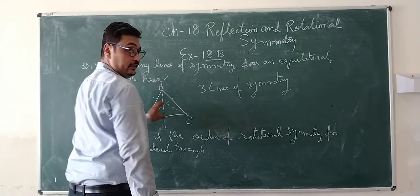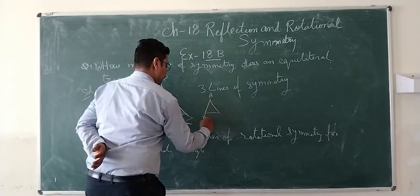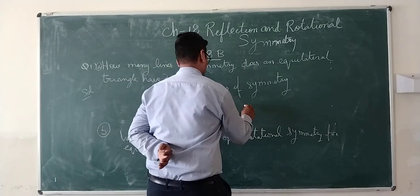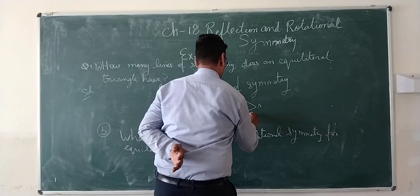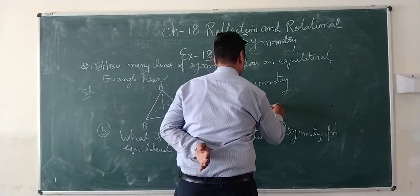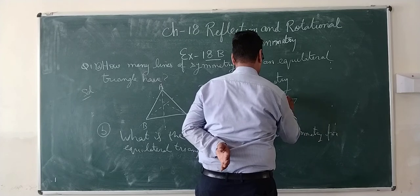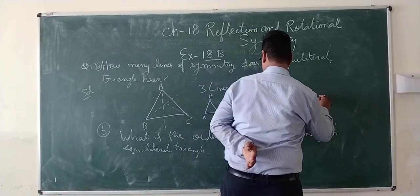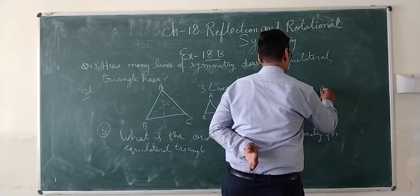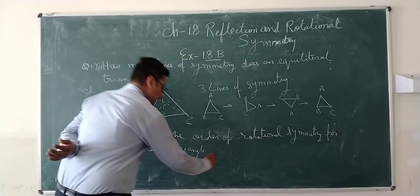Now when rotated first time, this is the original. When we rotate it becomes something like this, then again we rotate it, it becomes this, and again when we rotate it becomes... So it has the order of rotation 3.